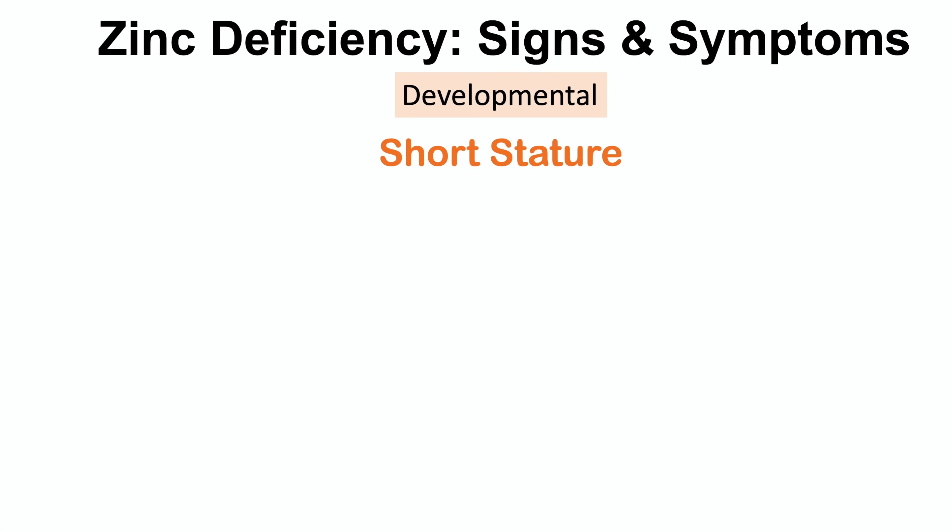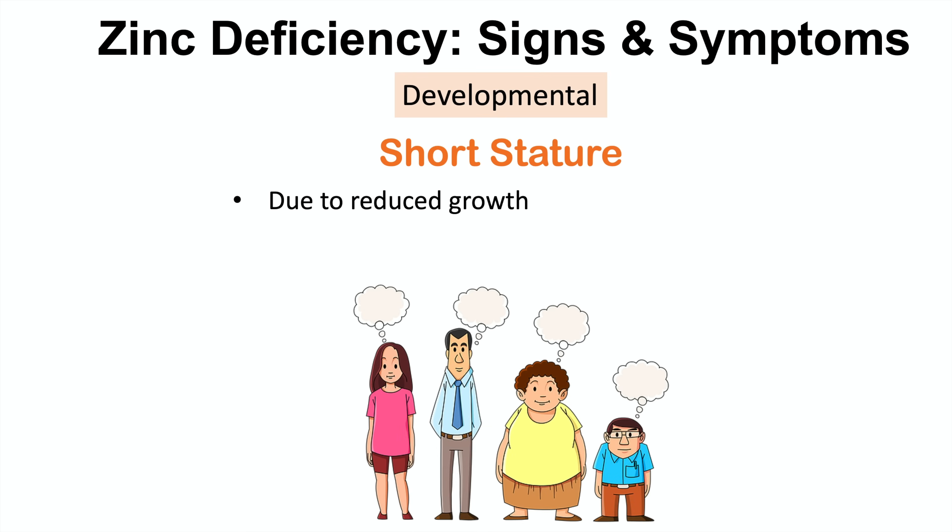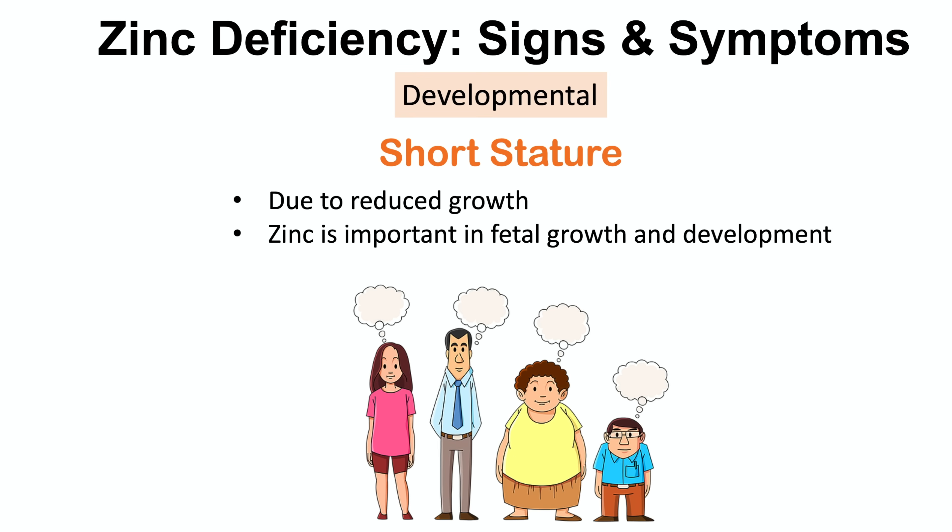The first system is developmental. We talked about zinc being important in fetal development; zinc deficiency can ultimately lead to short stature due to reduced growth. This is particularly important if there is a zinc deficiency early on in life, because zinc is important in fetal growth and development and growth in general early in life.